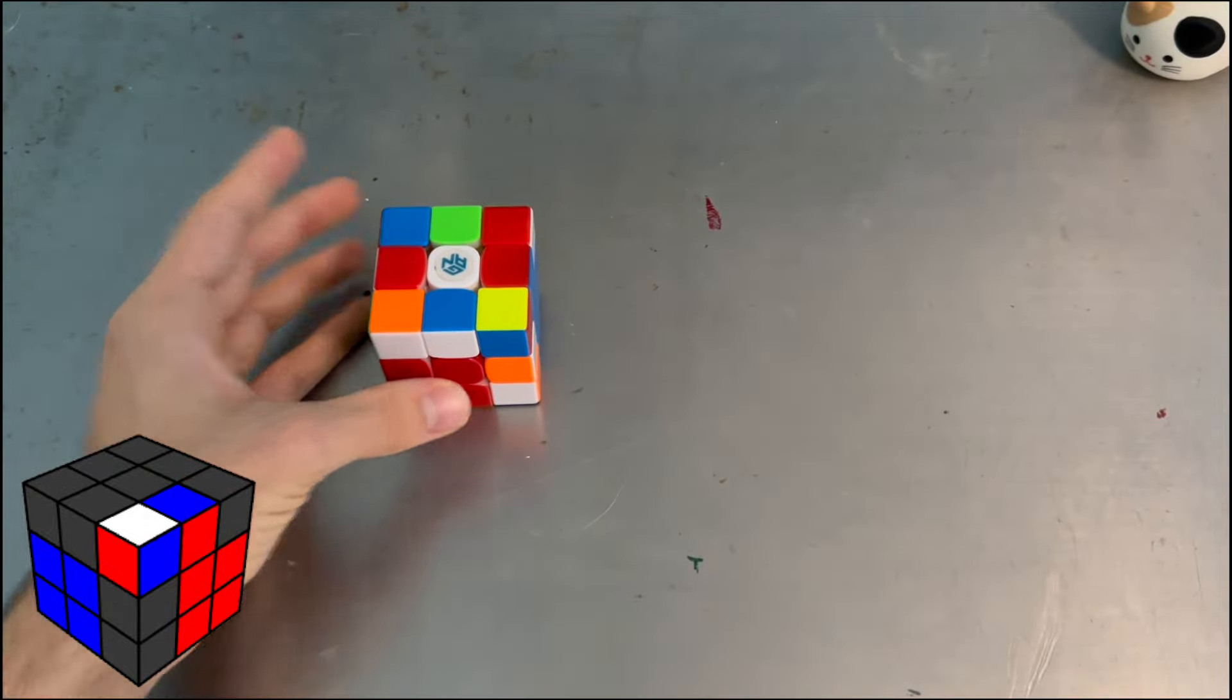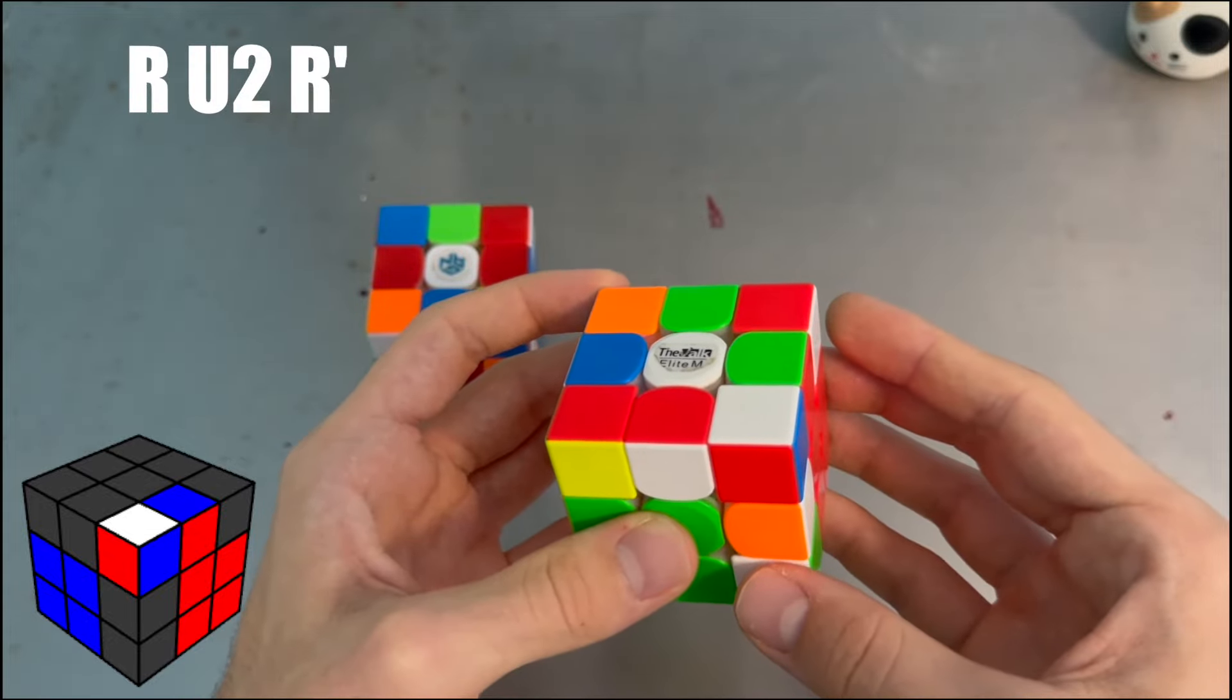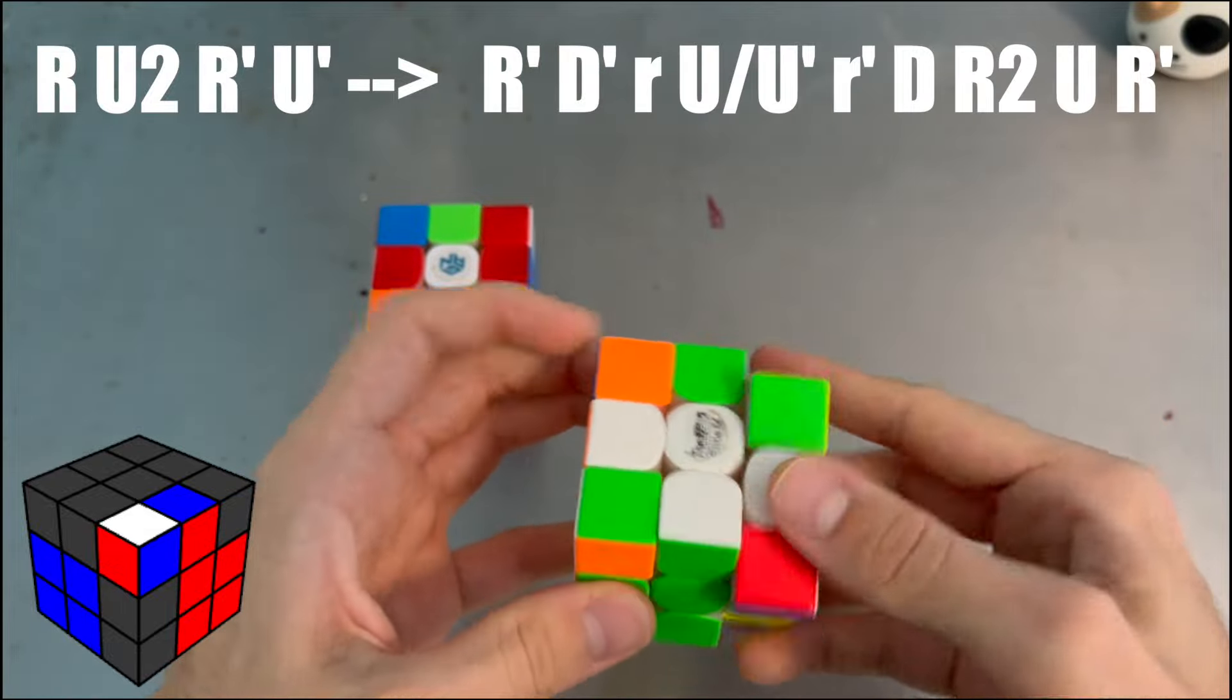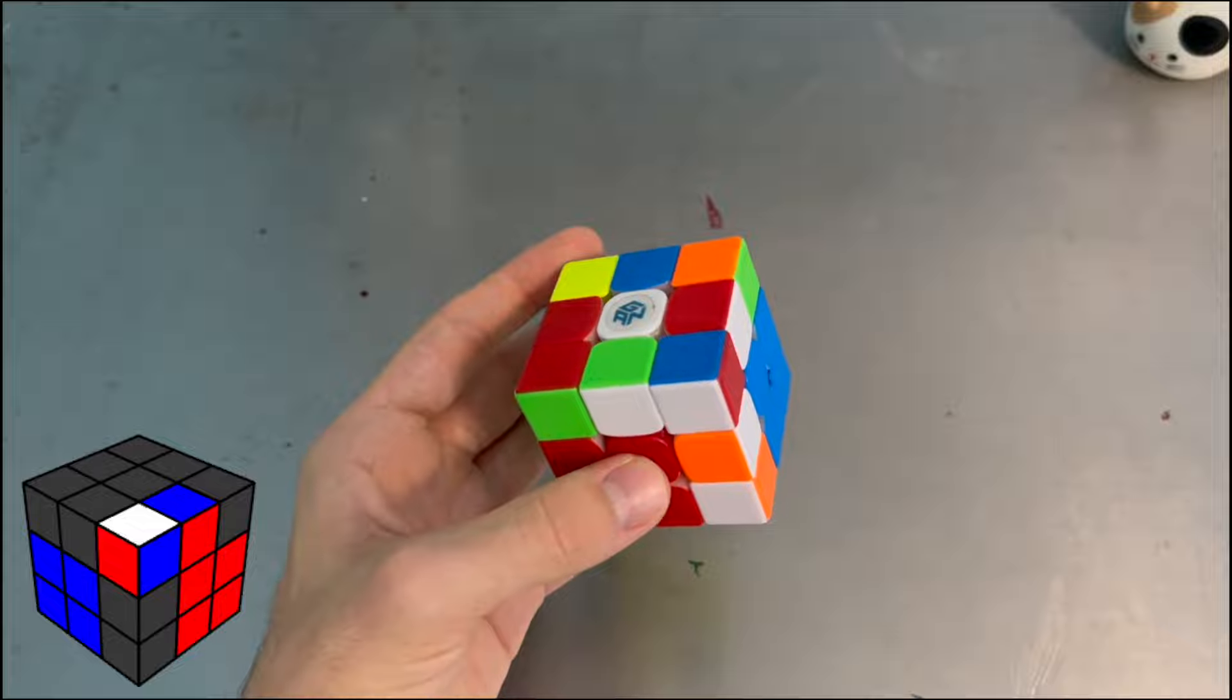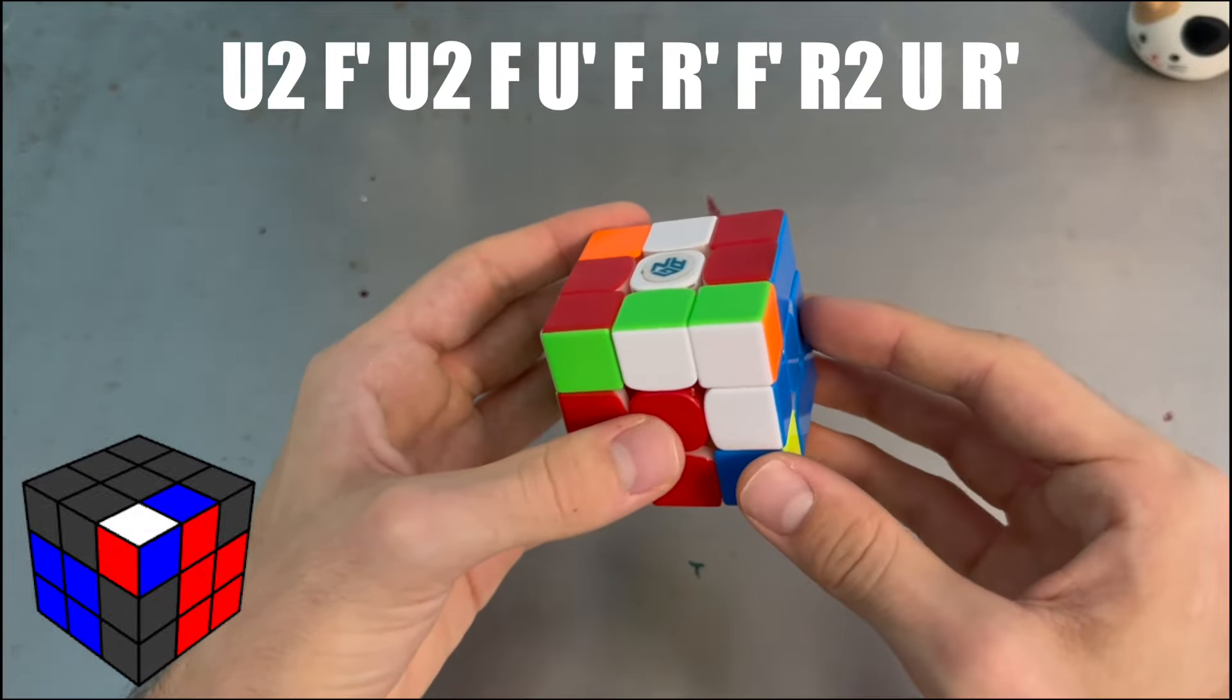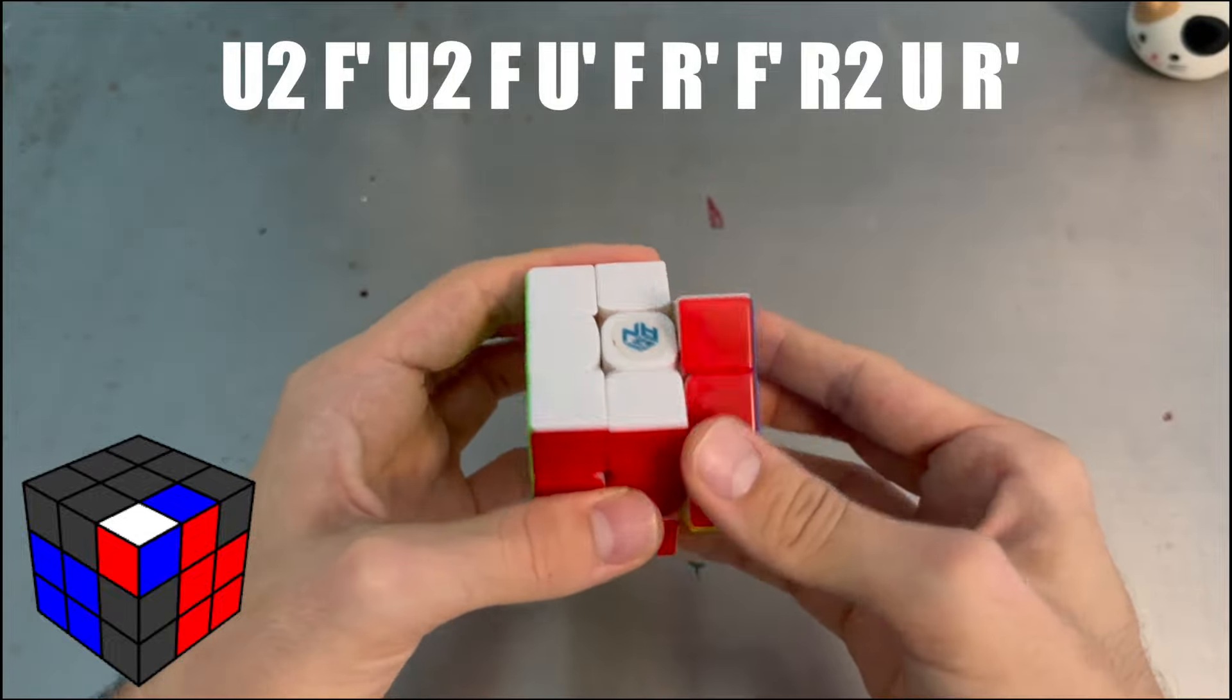Next up this case, which is normally a seven mover. From here you could do this, you could do this, or you could just do that. You can get full EO by doing F prime U2 F, a U prime move, and then hedge and cancel into a free pair insert.